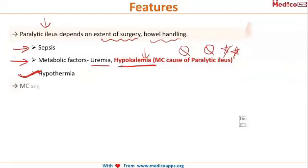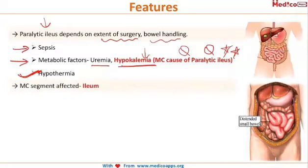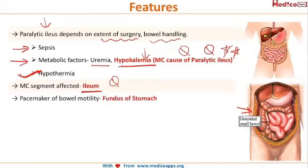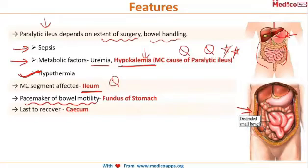The most common segment affected by paralytic ileus is the ileum, as the name suggests. The pacemaker of bowel motility is the fundus of the stomach — the fundus part acts as the pacemaker of bowel motility. The last organ to recover from paralytic ileus is the cecum, and this has also been asked in the exam.